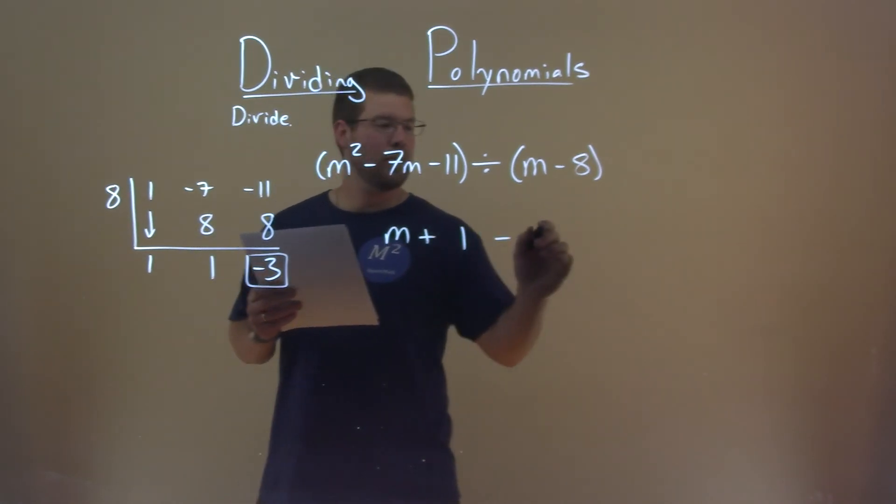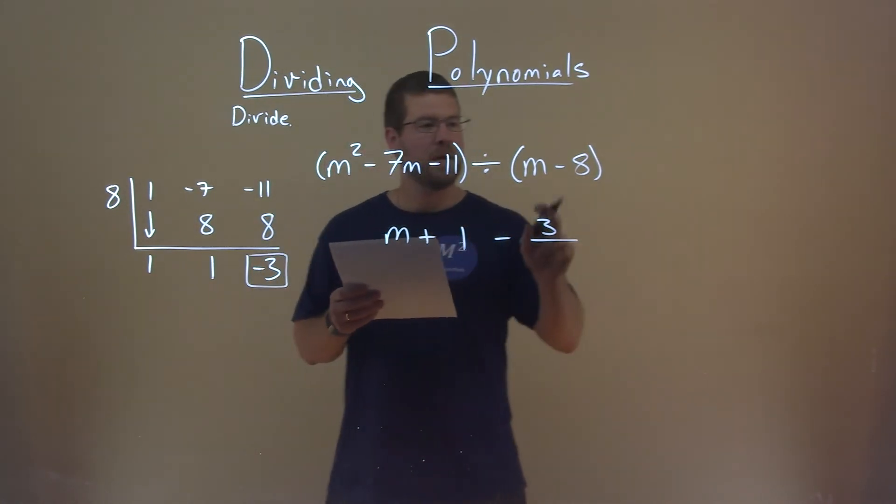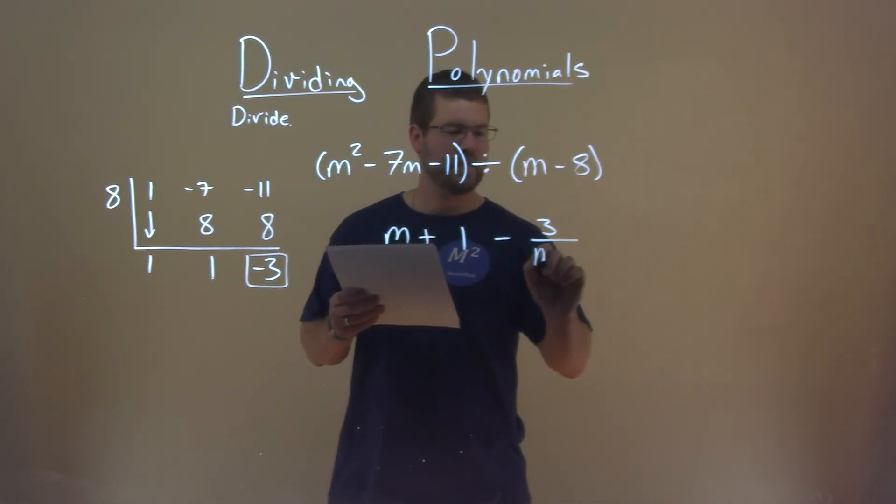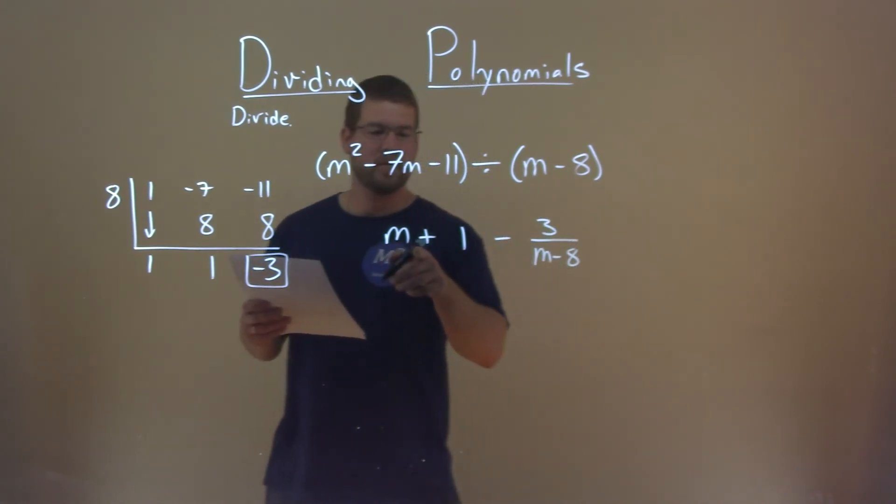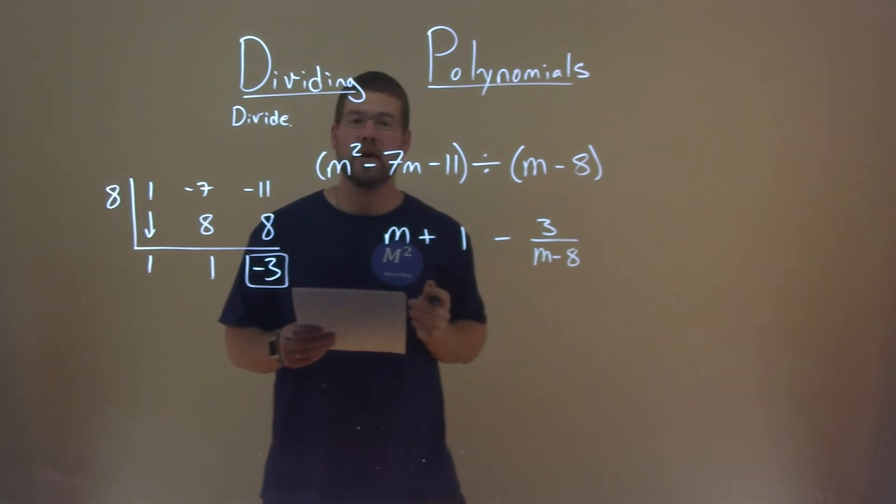Minus the remainder, 3, over, or we're dividing it by, m minus 8. And there's our answer: m plus 1 minus 3 divided by m minus 8.